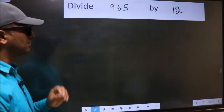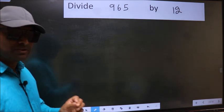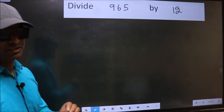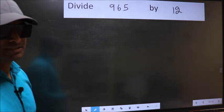Divide 965 by 12. While doing this division, many make a mistake. What is the mistake that they do? I will let you know, but before that, we should frame it in this way.